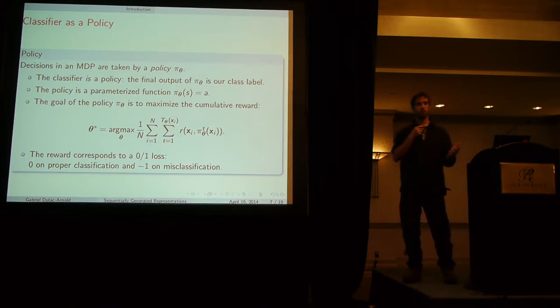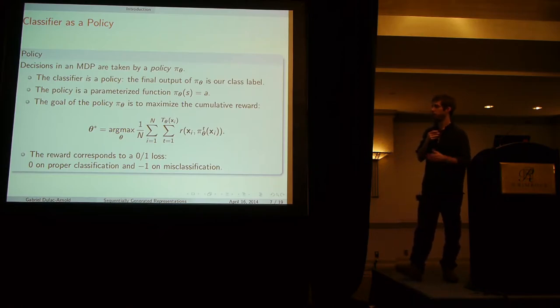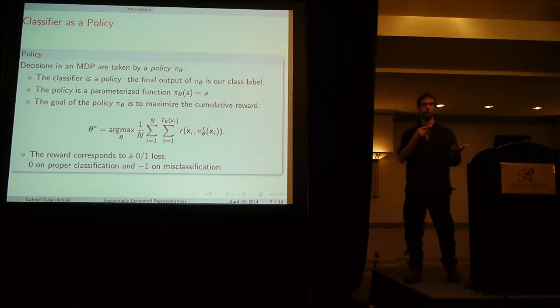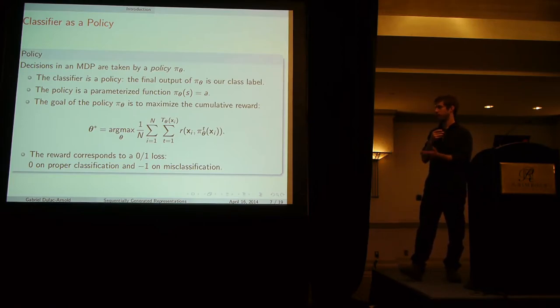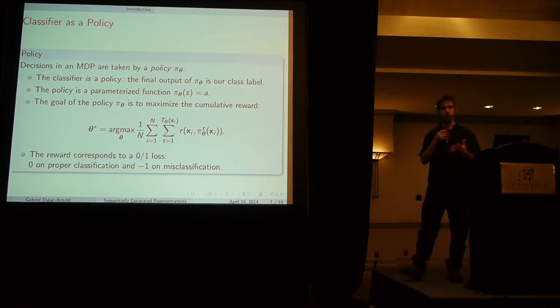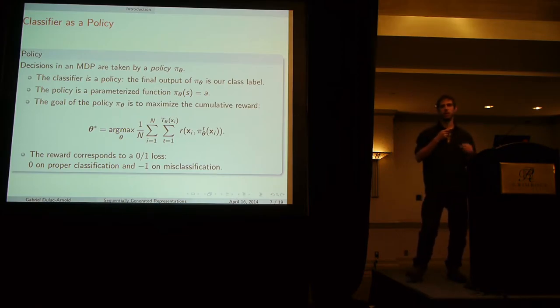In our case, our reward is actually quite simple. We just project a zero-one loss onto the reinforcement learning problem. We have zero reward in the case of proper classification, which is the zero penalty of zero-one loss on the correct label. And then negative one reward, which corresponds to a penalty of one on misclassification. You can show that solving this reinforcement learning task is equivalent to solving the request classification task.